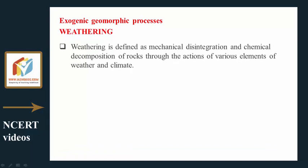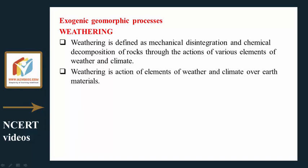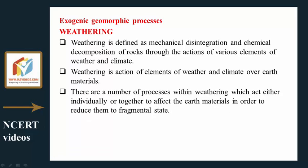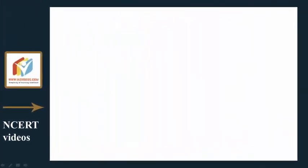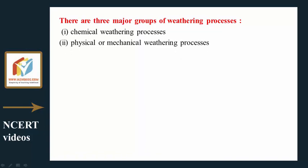Weathering is defined as mechanical disintegration and chemical decomposition of rocks through the actions of various elements of weather and climate. There are a number of processes within weathering which act either individually or together to reduce earth materials to a fragmental state. There are three major groups: chemical weathering processes, physical or mechanical weathering processes, and biological weathering processes.